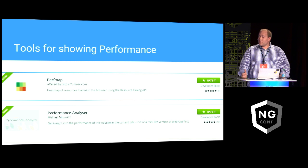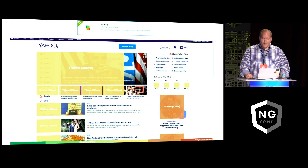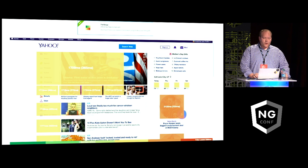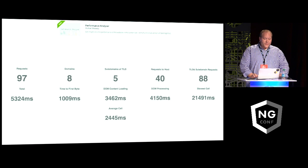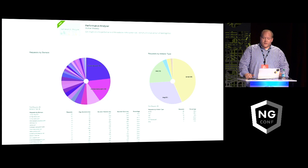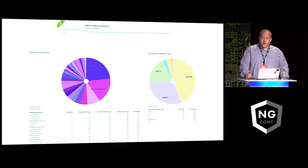I'm going to go through a couple tools I use for performance profiling in the browser. The first is perf map — it gives you a visual representation of different parts and assets on your page and how long they took to load. Performance analyzer gives you a much higher level of information and helps break down interesting slow spots such as time to first byte and how long it took to actually process the DOM. In these charts you can see the number of requests, how long they took, and quite a few domains listed, and we can begin to see what culprits are slowing down our performance.